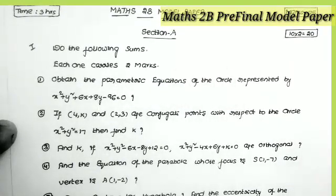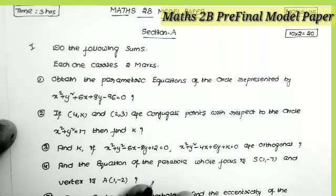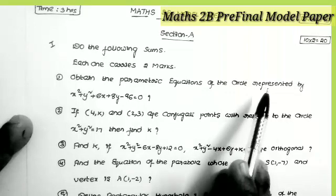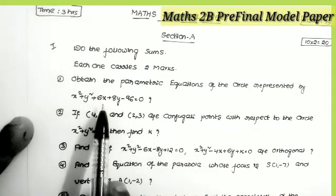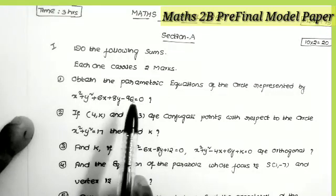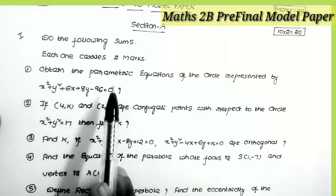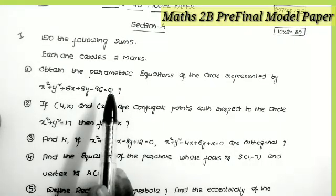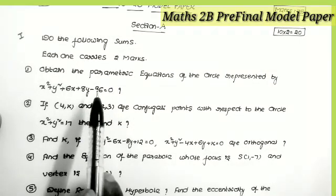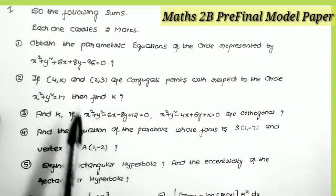Section A contains two-mark questions. Total number of questions is equal to 10, and you have to attend all the questions. The first one: obtain the parametric equations of the circle represented by x² + y² + 6x + 8y − 96 = 0. The formulas for parametric equations are x = h + r cosθ and y = k + r sinθ, where r is the radius and (h, k) is the center of the given circle.